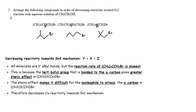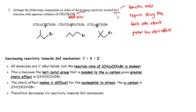For question number two, arrange the following compounds in decreasing reactivity towards SN2 reaction with an aqueous solution of ethanol (CH₃CH₂OH), which is a weak nucleophile. To recall: SN2 mechanism involves a transition state, requires a strong nucleophile, involves backside attack of the nucleophile, and prefers less steric effect.